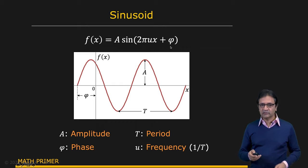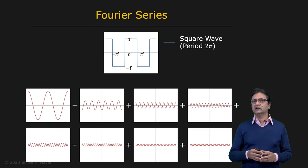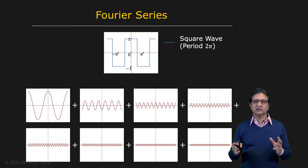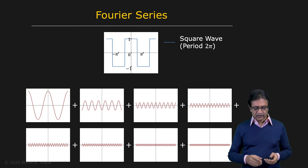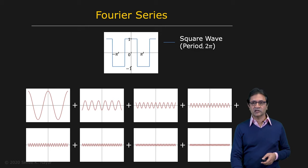So let's get back to Fourier. What does Fourier say? He says that if you have a periodic function, it can be, without loss of information, described using a sum of sinusoids. So here you have a periodic function which is a square wave. Let's say that the period of the square wave is 2π. Let's see how this can be constructed as a sum of sinusoids.